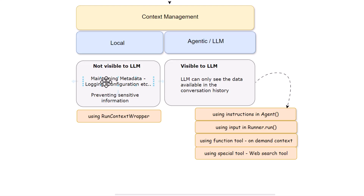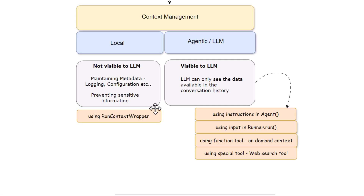Another case where local context management is useful is passing sensitive information. There could be certain IDs or characteristics which we do not want to pass to LLM but are required from your data or application perspective. To enable this local context management we are going to use something called RunContextWrapper in the OpenAI agent SDK.